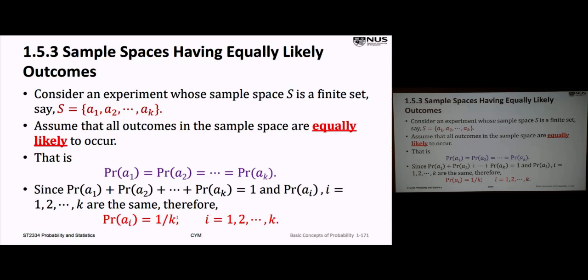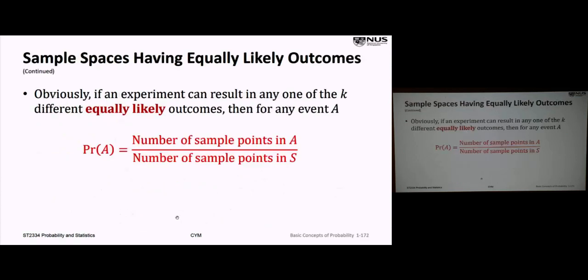If an experiment can result in any one of K different equally likely outcomes, then the probability that an event A occurs is simply the number of sample points in that event A over the total number of points in the sample space. For example, if there are three events in A and K events in S, the chance of A occurring is three over K.